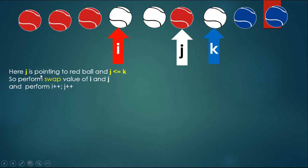Here j is pointing to a red ball and j less than or equal to k, so perform swap of value of i and j, and perform i++, j++.